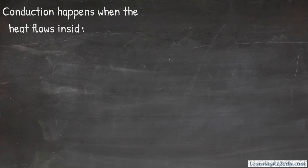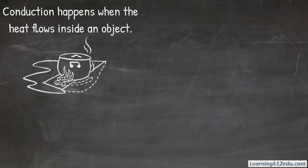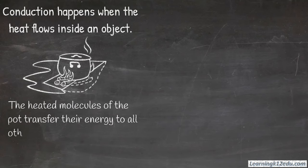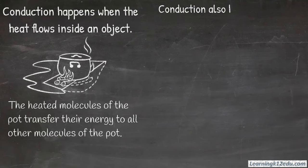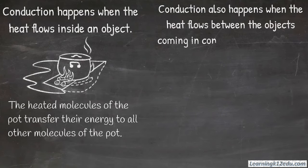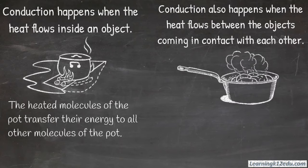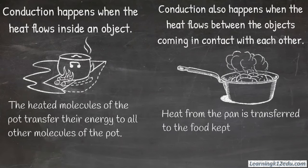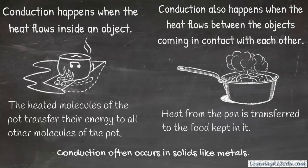Conduction happens when the heat flows inside an object. For example, when a pot is kept on a heat source, the heated molecules of the pot transfer their energy to all other molecules of the pot. Conduction also happens when the heat flows between objects coming in contact with each other. For example, when food is kept on a hot pan, the heat from the pan is transferred to the food kept in it. Conduction often occurs in solids like metals.